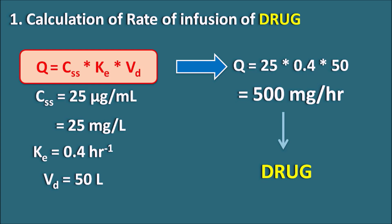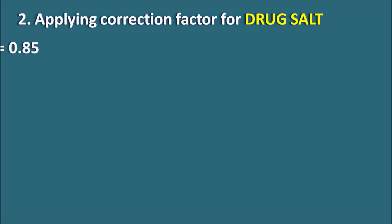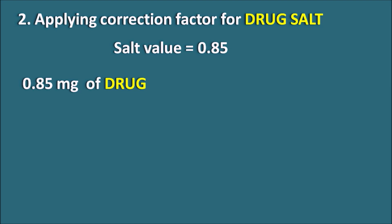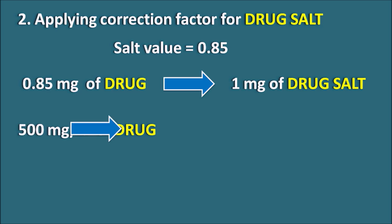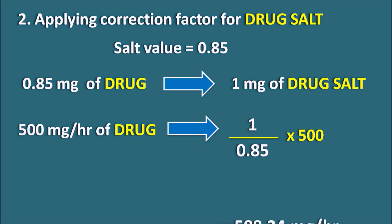This 500 mg/hr value corresponds to the pure form of the drug, since VD and ke are related to the pure drug. Because we are actually administering the hydrochloride salt, we must apply a correction factor. Step 2: the salt value of 0.85 means 0.85 mg of drug equals 1 mg of drug salt. Therefore, the infusion rate of the salt = 1/0.85 × 500 = 588.24 mg/hr.